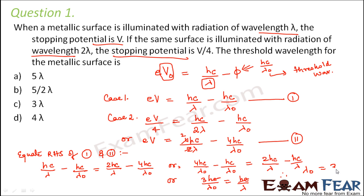The HC cancels, giving λ₀ = 3λ. So the threshold wavelength is 3λ, and option C is correct.